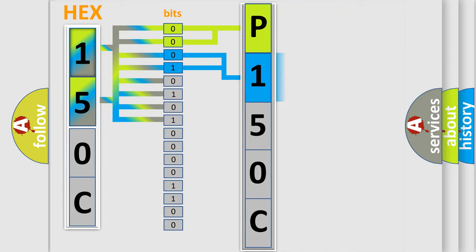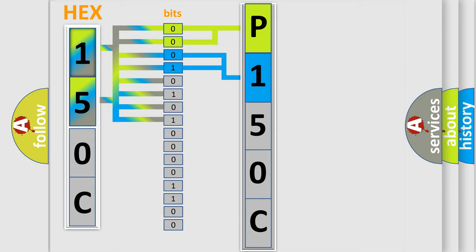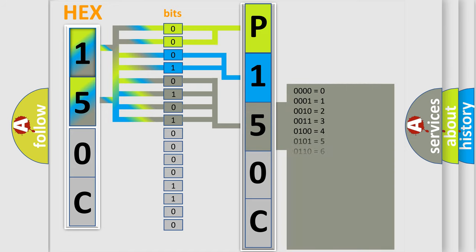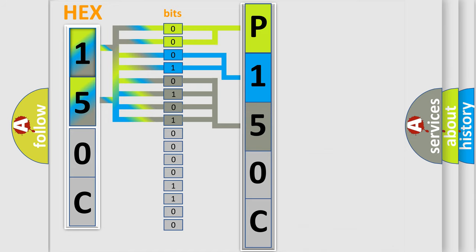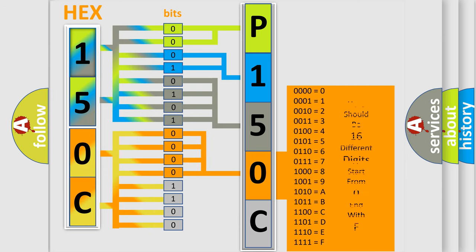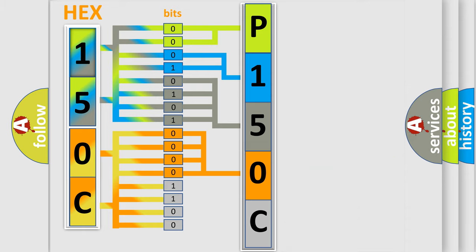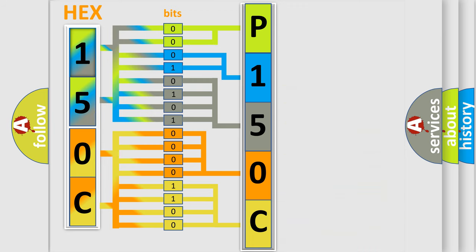The next two bits again determine the second character. The last bit styles of the first byte define the third character of the code. The second byte is composed of a combination of eight bits. The first four bits determine the fourth character of the code, and the combination of the last four bits defines the fifth character. A single byte conceals 256 possible combinations.